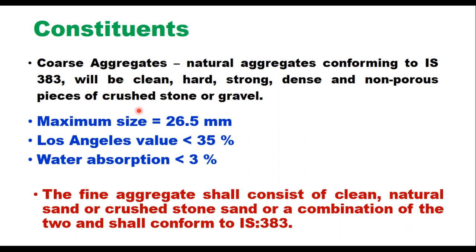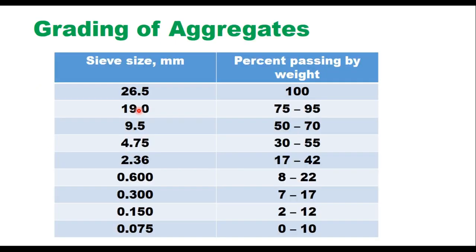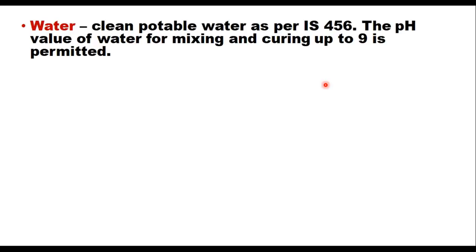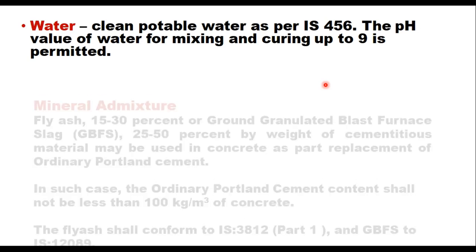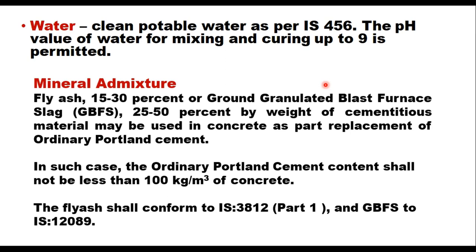The fine aggregate will be clean natural sand or crushed stone sand or a combination of sand and crusher dust conforming to IS 383. The grading of aggregate as specified in IRC SP 49 is: maximum size of aggregate 26.5 millimeters and nominal size of aggregate 19 millimeters. This is the grading of the final aggregate when coarse aggregate and sand are mixed. Water will be clean potable water as per IS 456. The pH value of water for mixing and curing up to 9 is permitted. Mineral admixtures are also suggested in IRC code — either fly ash or ground granulated blast furnace slag (GGBFS).